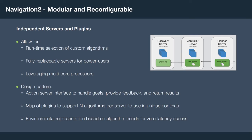Another main tenant of the Navigation 2 system is modularity and reconfigurability, achieved through independent task servers and plugin interfaces for algorithms. This allows you at runtime to select any number of custom plugins for use. It also allows you to fully replace these servers, implementing them in other languages or with new features. We also leverage multi-core processors using multi-processing frameworks to compute more complex navigation tasks. Each server has an action server interface to handle goals, provide feedback, and return results to the client, and a map of plugins supporting N plugins per server for different algorithms in unique contexts.